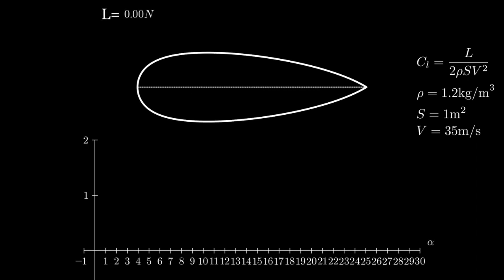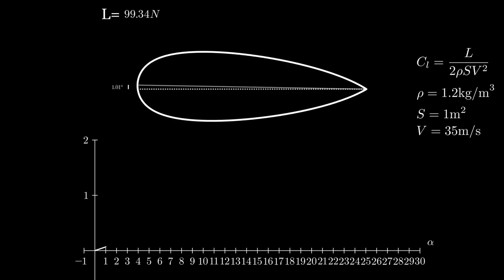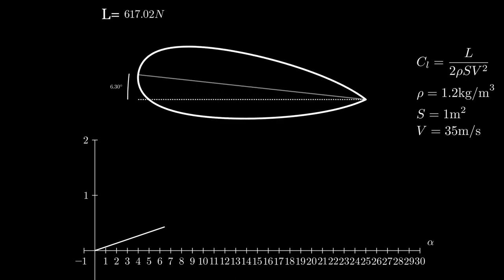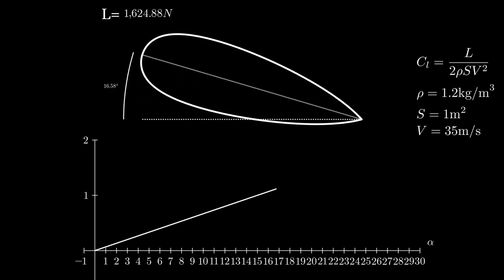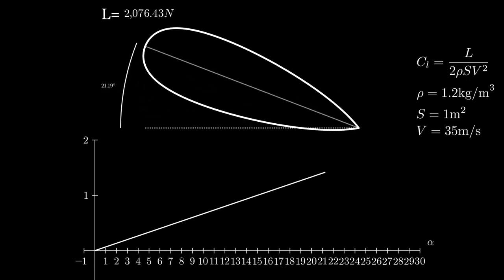We then place this wing back into the wind tunnel, again, and just measure how much the airfoil is pushing in the upwards direction across a range of angles of attack. At zero, we have zero lift due to this being a symmetrical wing.